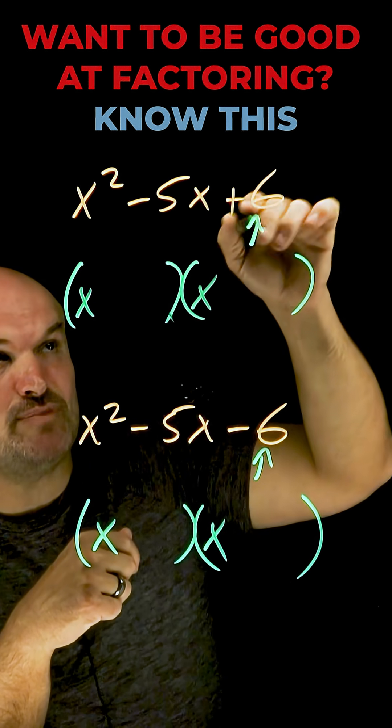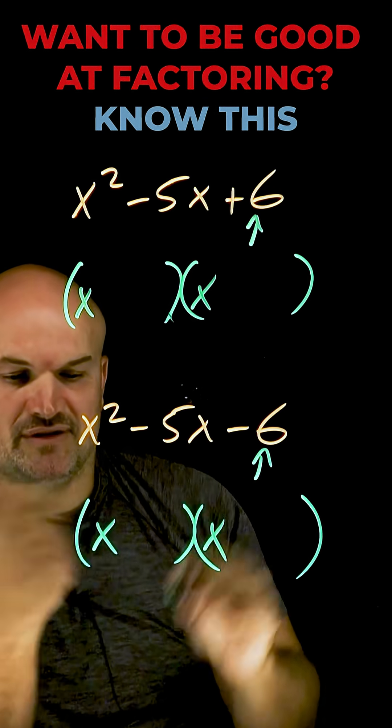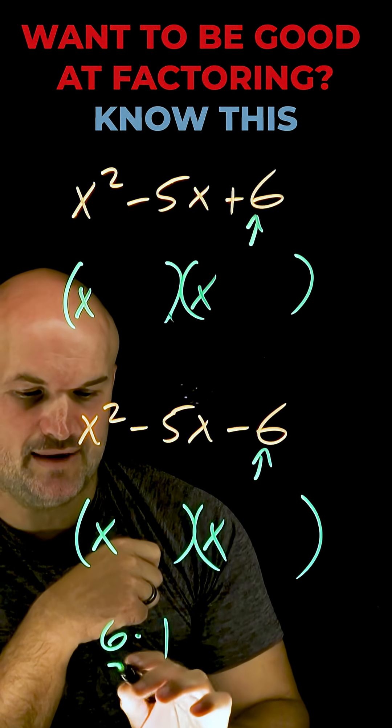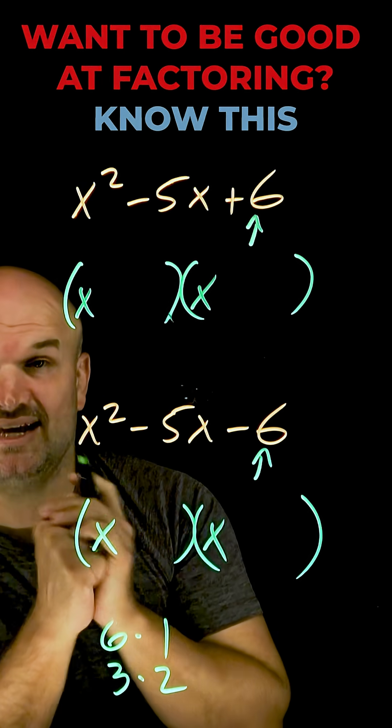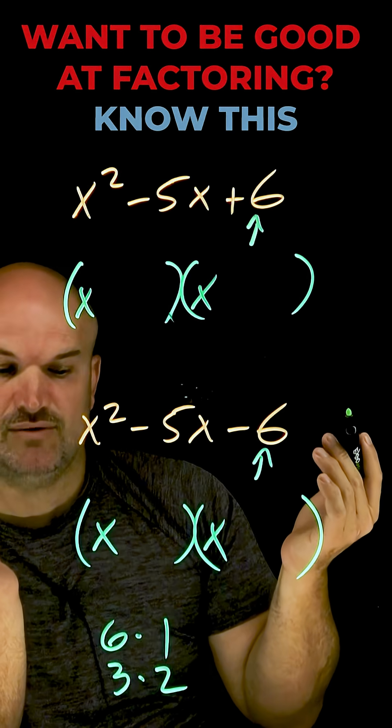The last two terms are going to multiply to give us this last digit. So we got to think six. What are the factors of six? Well, we have six times one and we have three times two. I'm not worried about the positive and the negatives just at this moment. So we have our two options: six and one, three and two.